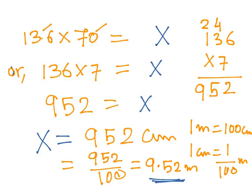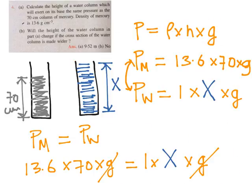So what we had: 70 centimeter of mercury. We required, for the same kind of pressure, if I have to replace mercury with water, 952 centimeter height of water. It doesn't matter what is the cross-section area of that particular tube; pressure only depends upon the height, that is 9.52 meters.